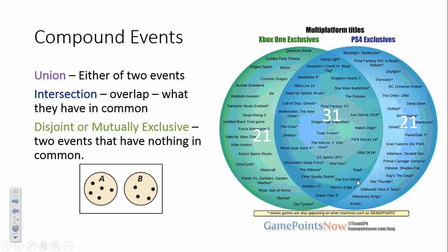Compound events today are easy to see when they're in a Venn diagram. So, for example, how many of you are gamers? Do you like to play video games? Back when they first, I think this was actually in 2013, when they were at one of the consumer product shows in Vegas, they listed all of the different games that were available for Xbox One and PS4.